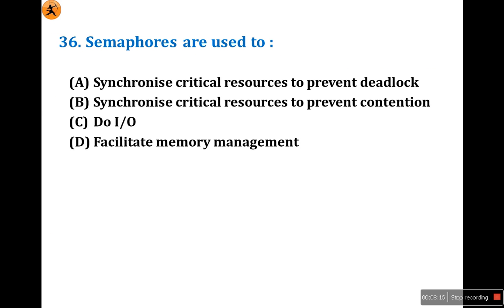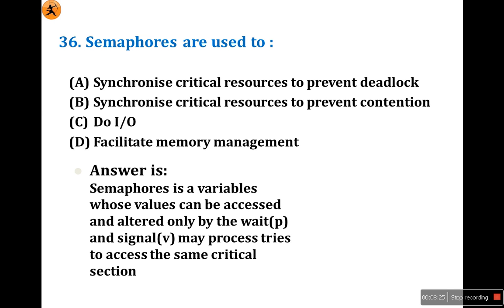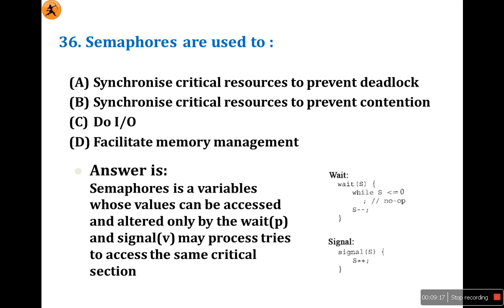Semaphores are used to — semaphores are majorly used to prevent deadlock. Semaphores are variables whose values can be accessed and altered only by the wait and signal operations. When a process tries to access the same critical section, semaphores are used to synchronize critical resources to prevent deadlock. Option D and option C have no relevant keyword here — only options A and B mention preventing deadlock or preventing contention. According to the answer, a semaphore is a variable whose values can be accessed and altered only by wait and signal. So the answer is A.